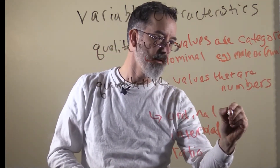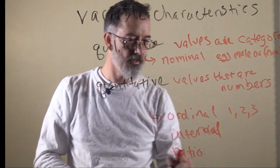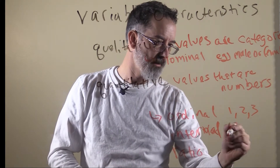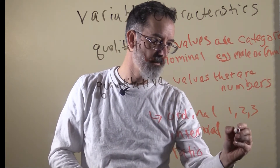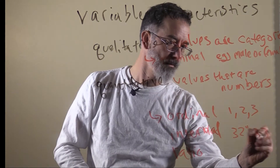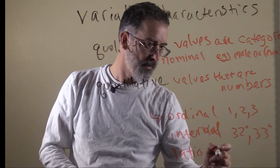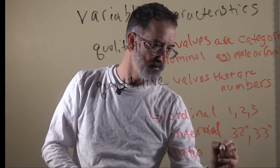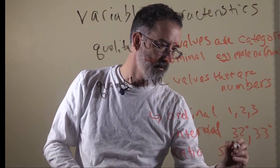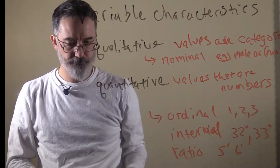Ordinal variables have ranks like first place, second place, third place. Interval variables are numbers such as temperature in Fahrenheit — 32 degrees is when things freeze. Ratio variables are things like inches or feet, so you can be five feet tall or six feet tall. Those are all numbers.